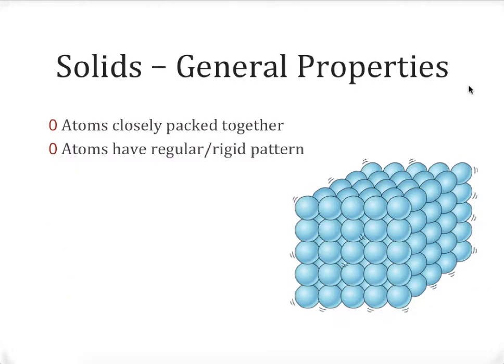So let's start with a discussion of the general properties of a solid. This should be information we've already seen in this unit, but I want to make sure it's fresh in your mind before we continue. In solids, the atoms are very closely packed together in a very regular rigid pattern, clearly shown in the diagram. We see this regular structure, which is one of the hallmarks of something being a solid.